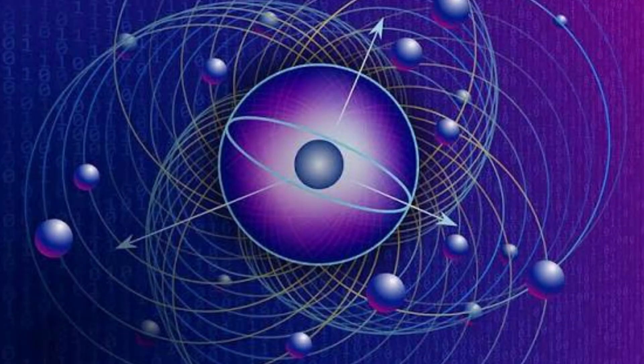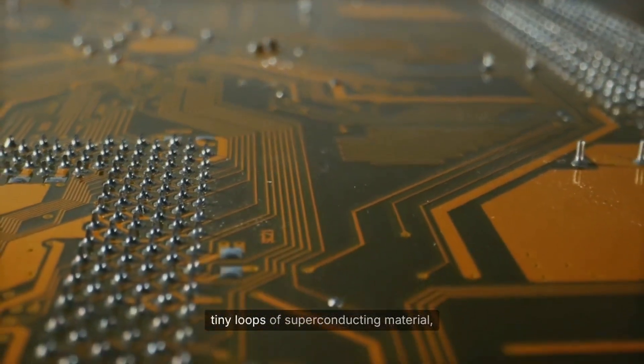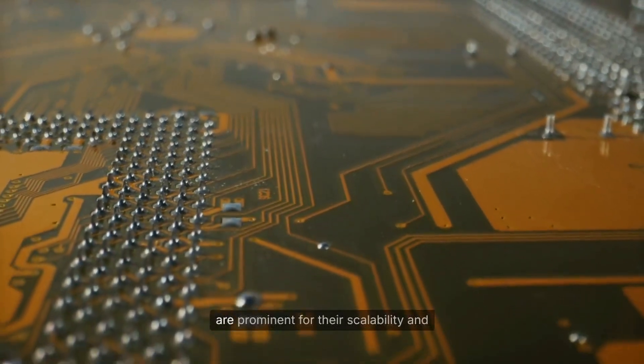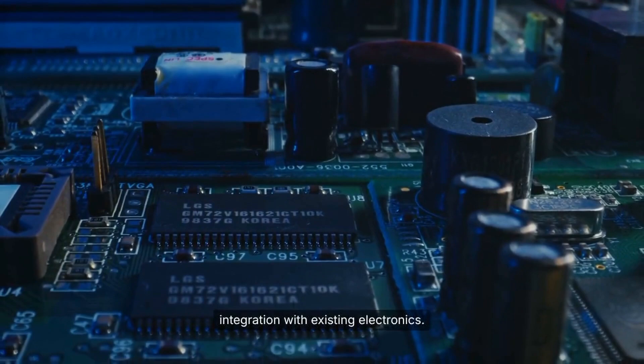Qubits, the fundamental units of quantum information, can be physically realized using several advanced technologies. Superconducting circuits, which use tiny loops of superconducting material, are prominent for their scalability and integration with existing electronics.